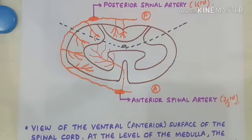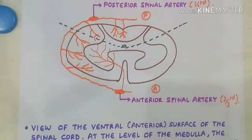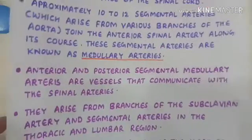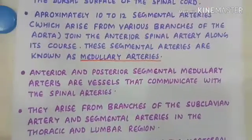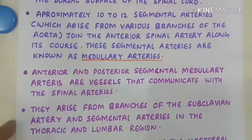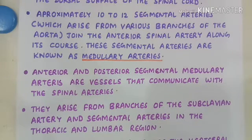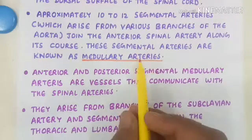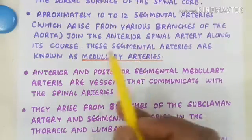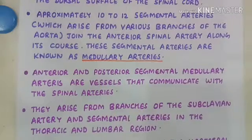The vertebral arteries give rise to the paired posterior spinal artery that runs along the dorsal surface of the spinal cord. There are approximately 10 to 12 segmental arteries which give rise to various branches of the aorta that join the anterior spinal artery along its course. These segmental arteries are also known as medullary arteries.